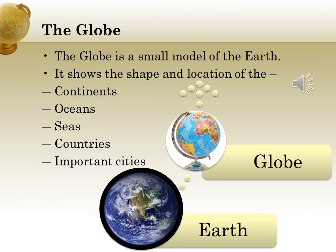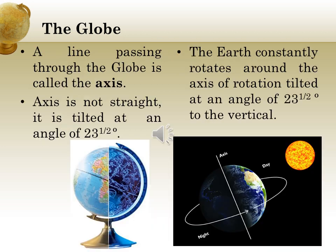The globe is a small model of the earth. It shows the shape and location of the continents, oceans, seas, countries, and important cities. You can only see half of the globe at one time, as you have to turn the globe around to see the other half. The globe can be turned around with the help of a line passing through it, which is called the axis.